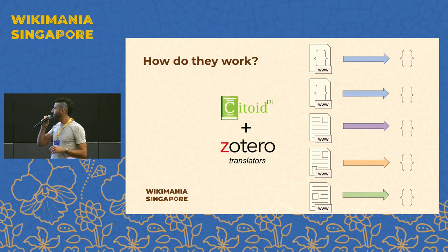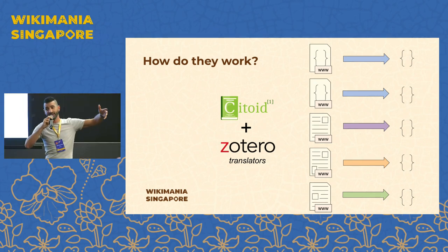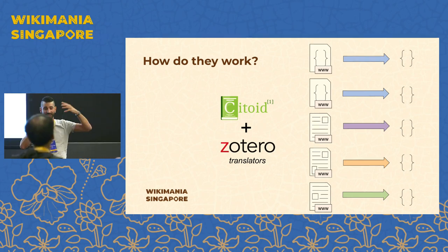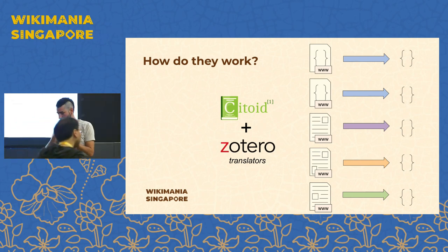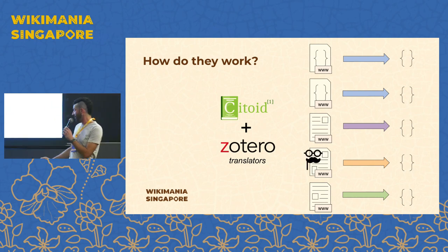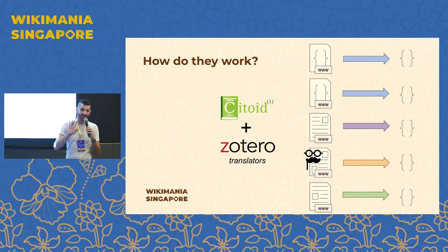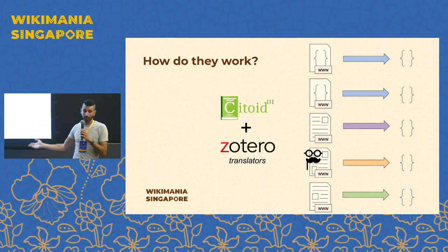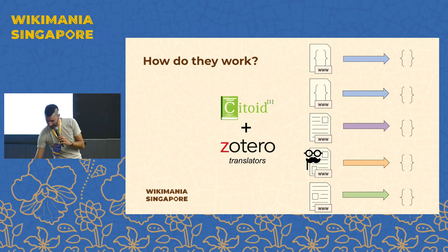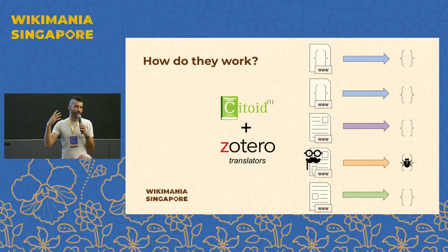The problem with specific translators is that we need as many translators as there are websites, which is a lot. Also, when web pages change — sometimes just slightly — the translator no longer works and the extracted citation metadata becomes wrong.